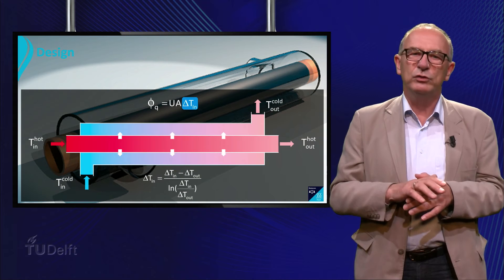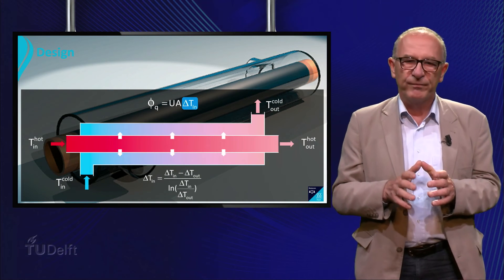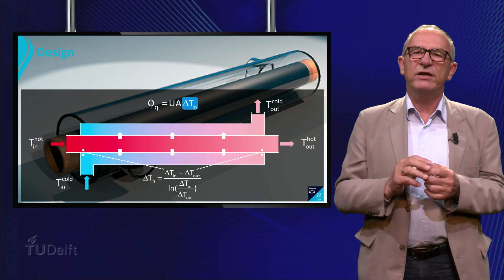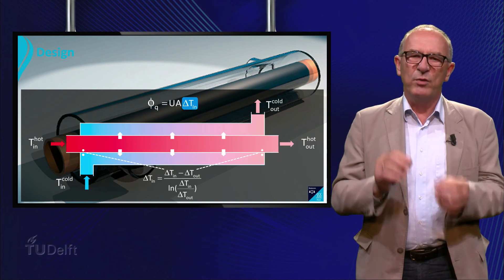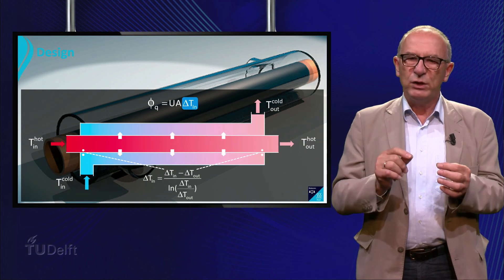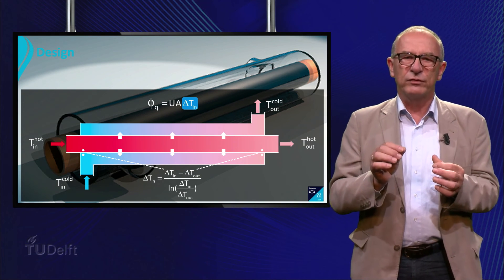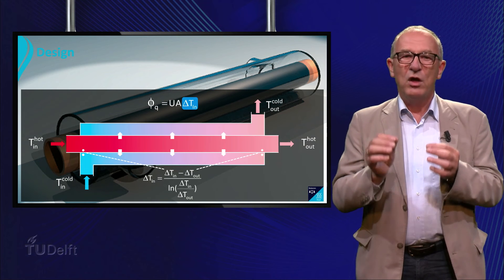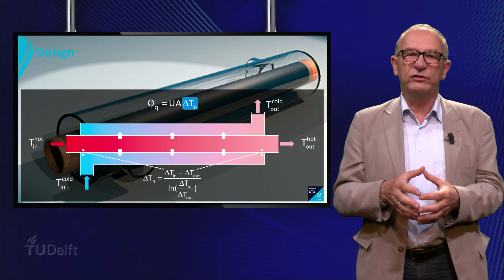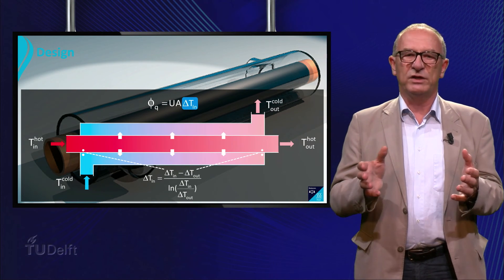We will not go into the derivation of delta TLM here. Delta T_in represents the temperature difference between the hot and cold fluid at the inlet, and delta T_out represents the temperature difference at the outlet. Summarizing: with the thermal energy balances and the heat transfer equation, we are able to obtain the surface area and the length of the heat exchanger.